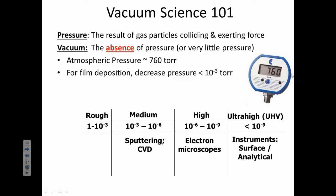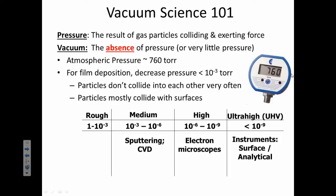For film deposition, you want a pressure of 10 to the negative 3 torr. So that is way, way smaller than atmospheric pressure. At this pressure, particles don't collide into each other very often. They mostly collide with the surfaces. And you don't want things to collide with your very thin layer, because that can cause contaminations to happen.